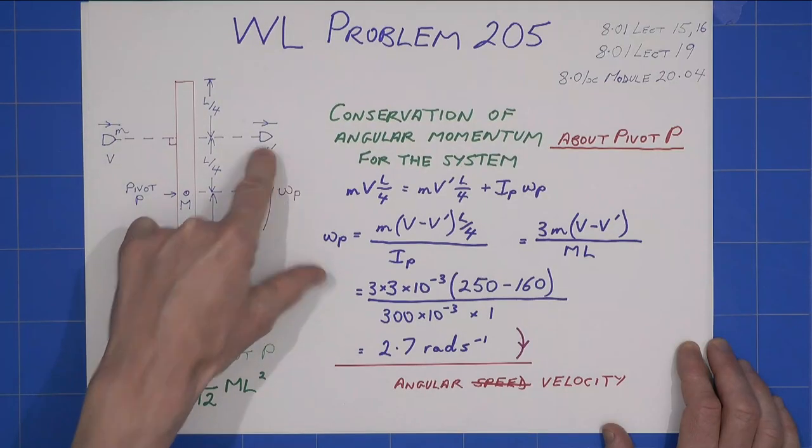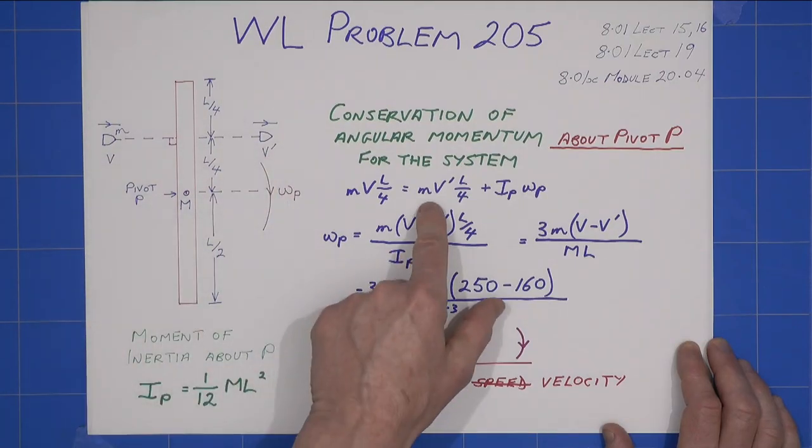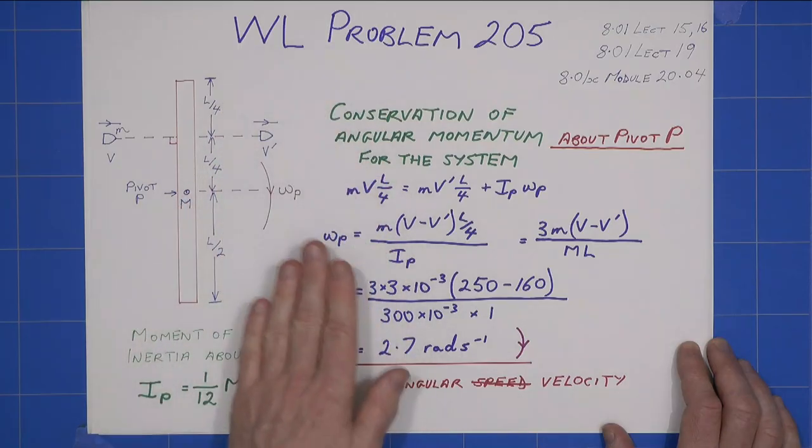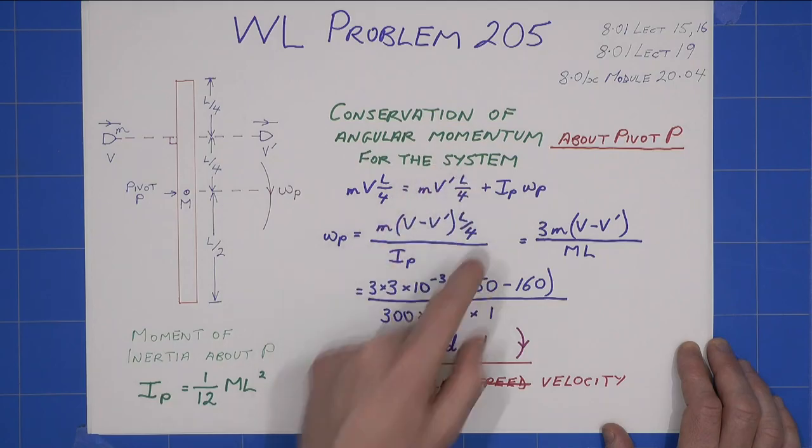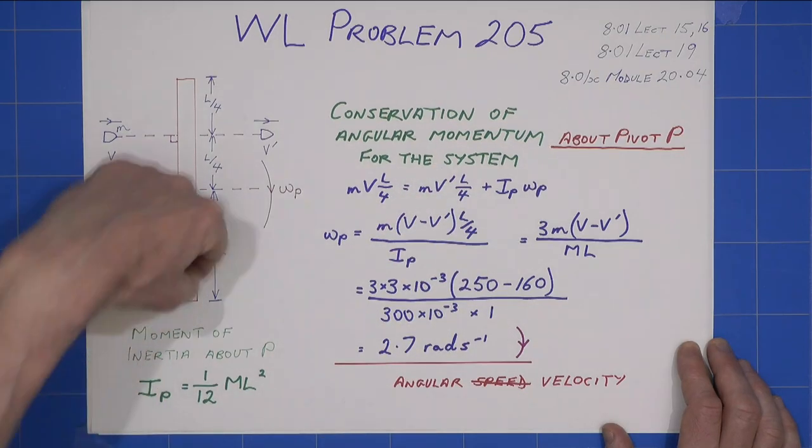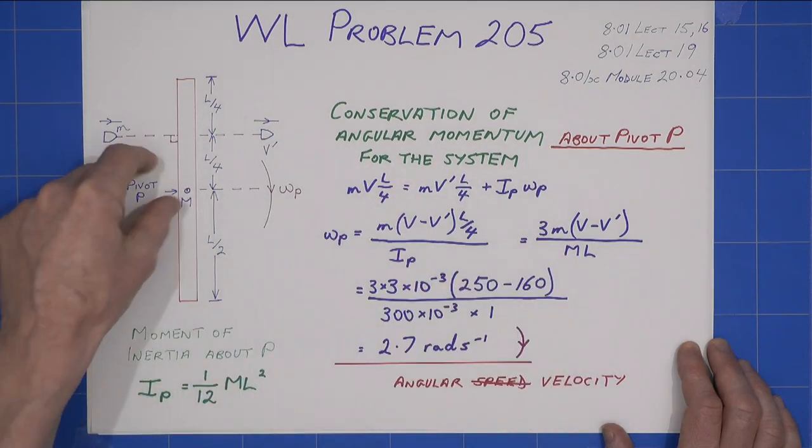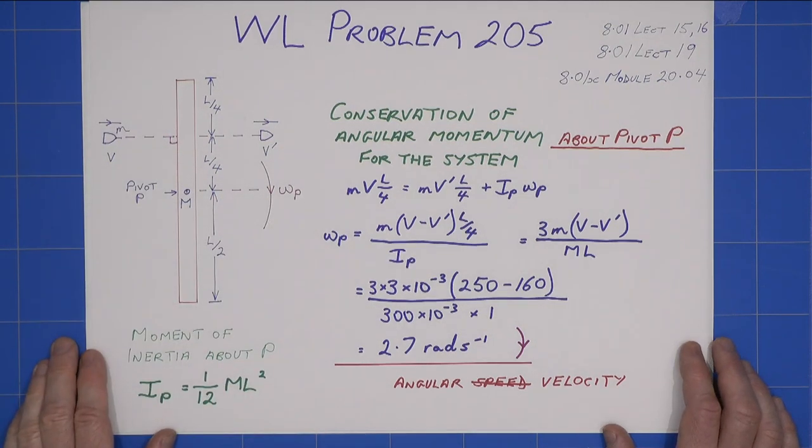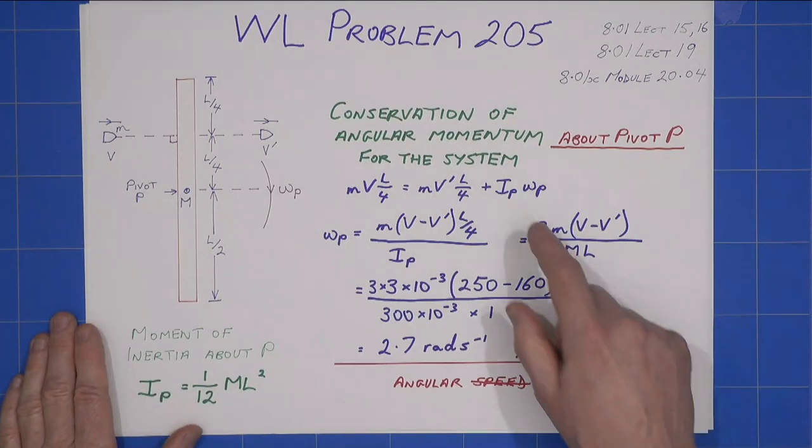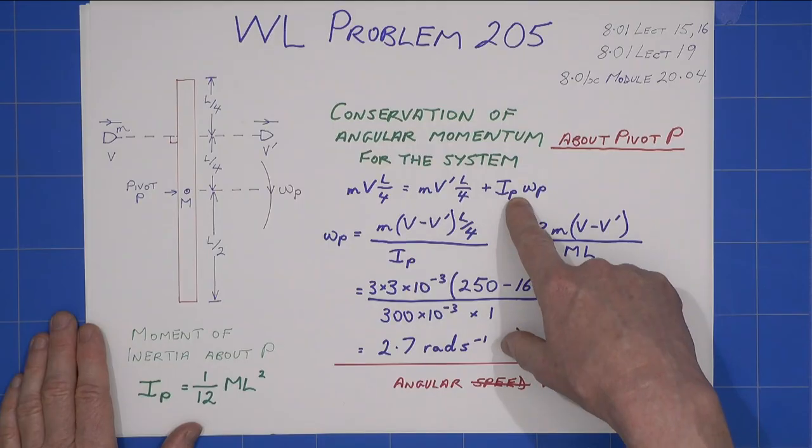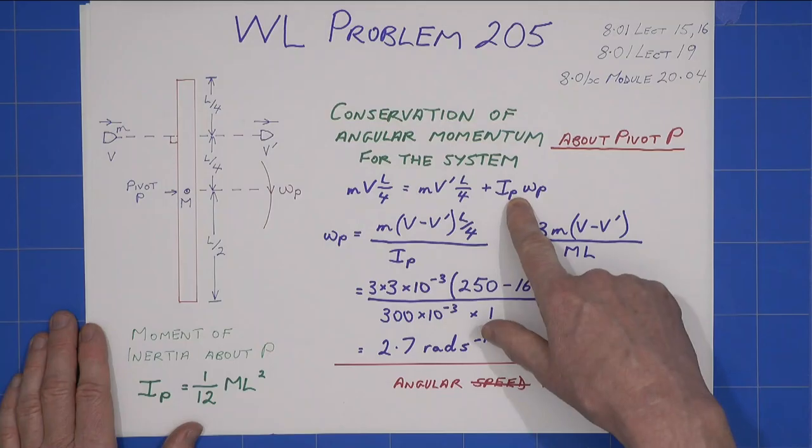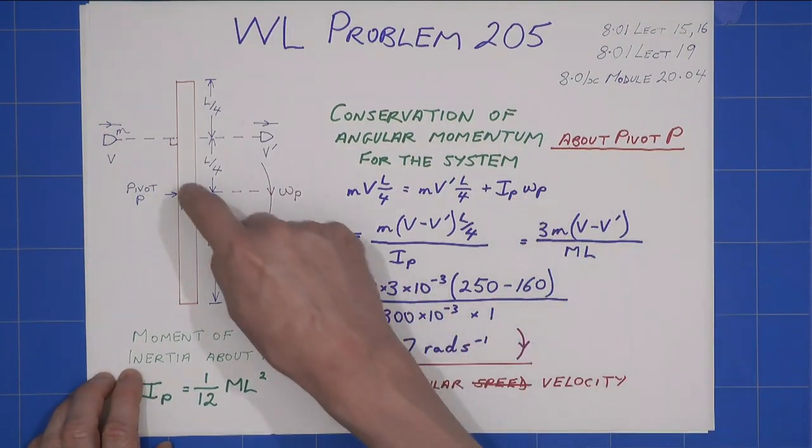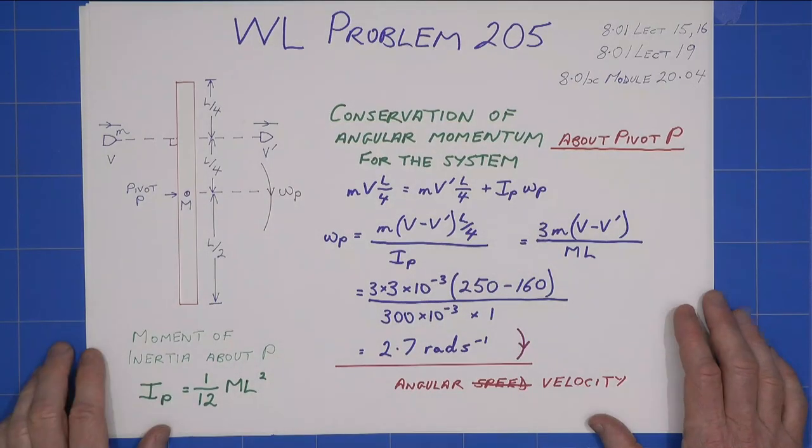Initially velocity v, now it's got v prime. So its contribution to the angular momentum after the impact is this term here. But the rod is now spinning. It can't move away because of the pivot, but it can spin. And I've said it will spin with some omega p, about the pivot point. And the contribution here is i about p, where i is the moment of inertia about the pivot of the rod, times omega.